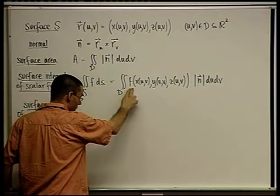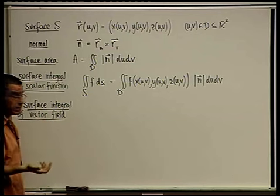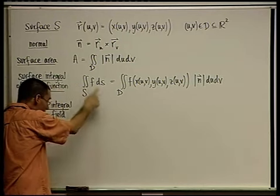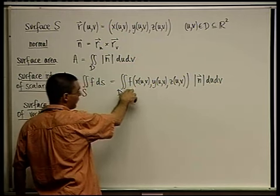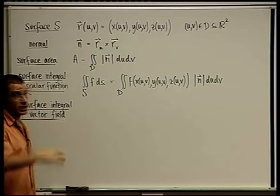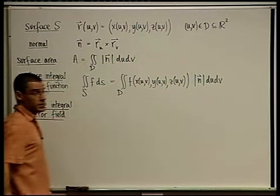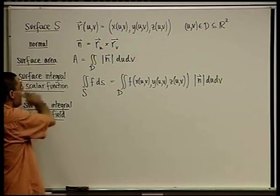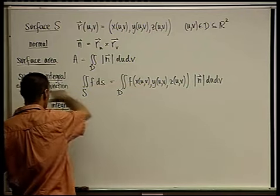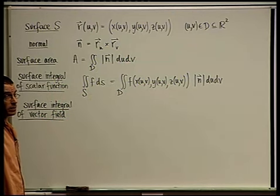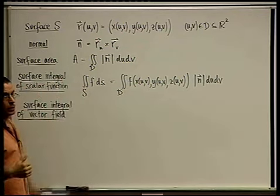Now, instead of a scalar function, we want a vector field, and we want to find out what the surface integral of a vector field means. The physical interpretation of the surface integral of a scalar function is very similar to that of a line integral of a scalar function: if F is mass density or charge density at every point in space, then the total charge or mass of the surface is given by this integral. Every integral of a scalar function has this interpretation — density summed gives total mass.